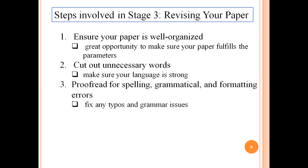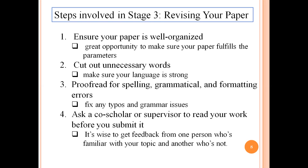Step 3 is to proofread for spelling, grammatical, and formatting errors. After you have revised your paper's outline, organization, and context, fix any typos and grammatical errors. Read your paper aloud to ensure you catch each and every error. As you read, check for the flow and remove any unnecessary lines. The next step is to ask a co-scholar or supervisor to read your work before you submit it. Have at least one or two people assess your paper's organization, spelling, and grammar before submitting it to a journal. New readers can help you find any mistakes and unnecessary sentences.